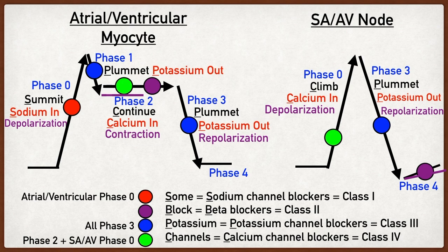Beta blockers also decrease heart rate by blocking beta-1 adrenergic receptors in the conduction system, blocking phase four of the pacemaker cells. Phase four is the resting phase where cells slowly become more positive until another action potential is generated. Blocking phase four decreases the firing of action potentials and the frequency of depolarization, ultimately decreasing heart rate. Together, decreased heart rate and decreased cardiac contraction help suppress tachyarrhythmias. In summary, beta blockers block phase two of non-pacemaker cells and phase four of pacemaker cells.